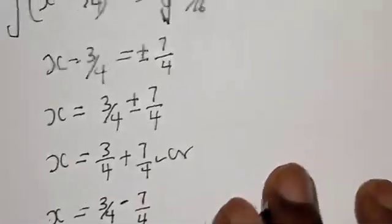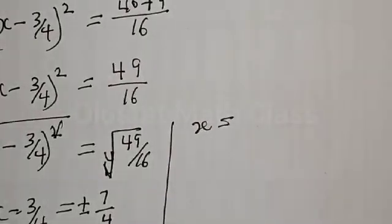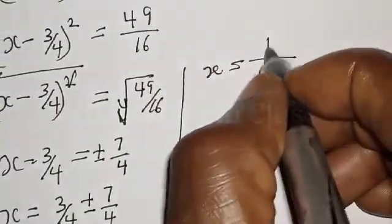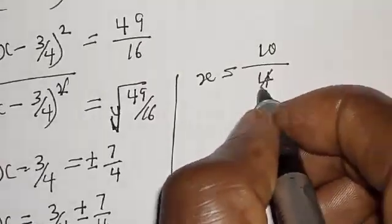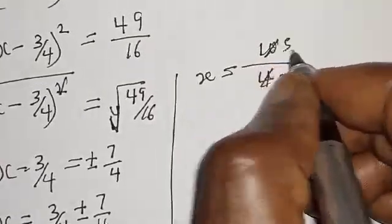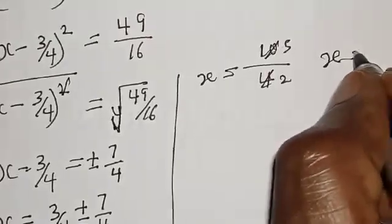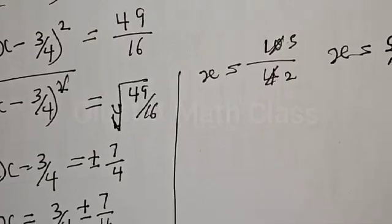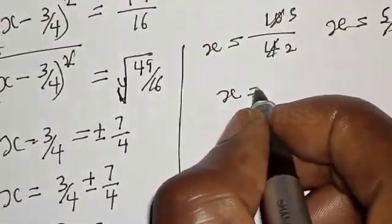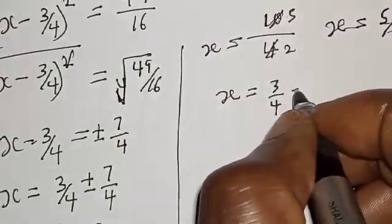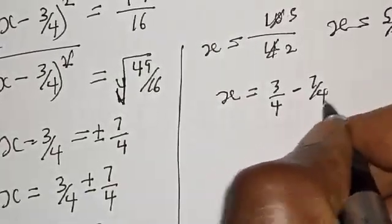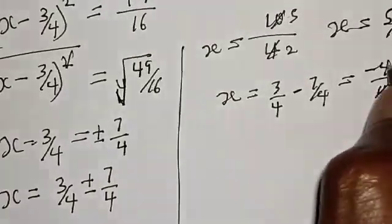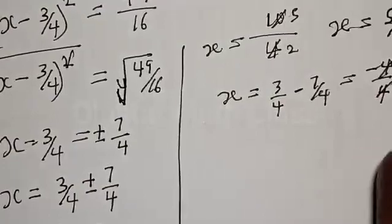From the first case: s = (3 + 7)/4 = 10/4. Simplifying, 10/4 = 5/2. From the second case: s = (3 - 7)/4 = -4/4. This simplifies to -1.